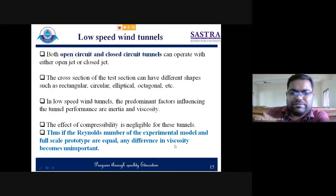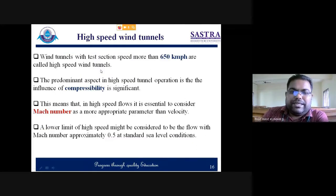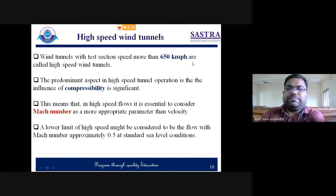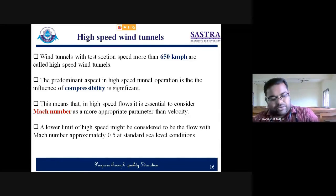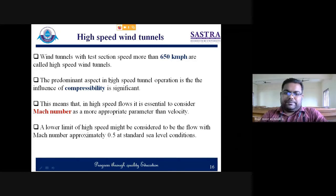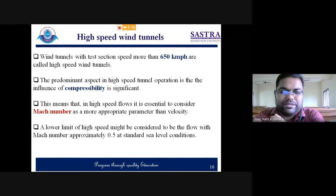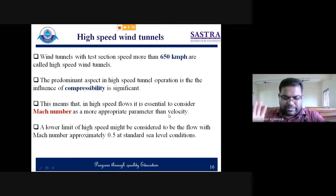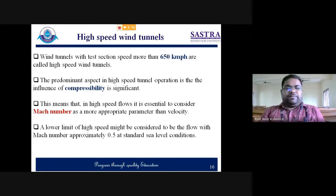For high speed wind tunnels, any test section velocity higher than 650 kilometers per hour is considered high speed. The predominant aspect here — unlike in low speed tunnels where compressibility effect was not considered — is that in high speed wind tunnels we need to consider the compressibility effect. Every parameter calculated in a high speed wind tunnel will be expressed in terms of Mach number. This means that in high speed flows, it is essential to consider Mach number as a more appropriate parameter than velocity — in low speed tunnels everything is expressed in terms of flow velocity, but in high speed tunnels Mach number is one of the important parameters.